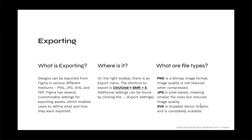Designs can be exported from Figma in various formats: PNG, JPEG, SVG, and PDF. Figma has several customizable settings for exporting assets. The export shortcut is Ctrl/Cmd+Shift+E. PNG is a bitmap image format where image quality is not reduced when compressed. JPEG is pixel-based, meaning smaller file sizes but reduced image quality. SVG is a scalable vector graphic — completely scalable without losing resolution.